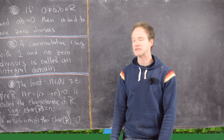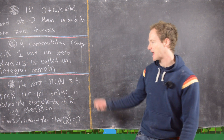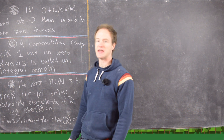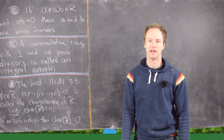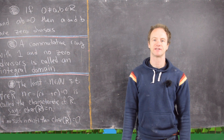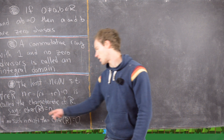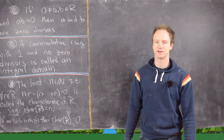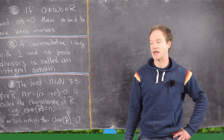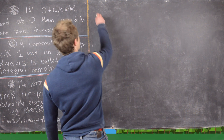The least positive integer — in other words the least natural number — such that for all r, when you add r to itself n times (which we can denote by multiplying n by r) you get zero, is called the characteristic of the ring R. We'll write char(R) = n and say the characteristic of R is n. It's possible that no such n exists, and in that case the characteristic will be said to be zero.